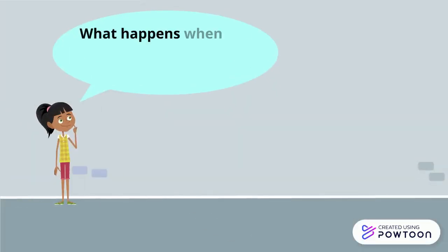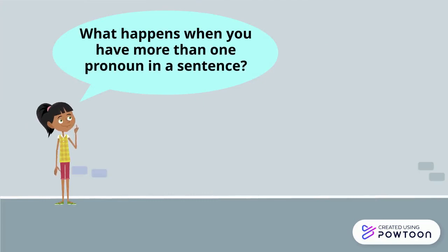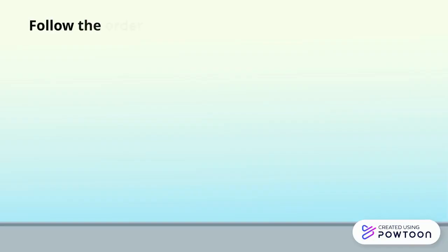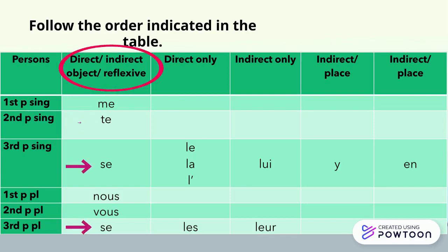What happens when you have more than one pronoun in a sentence? You have to follow the order indicated in the table. So, you will first have the pronouns that can be either direct, indirect, or reflexive: me, te, se, nous, and vous.